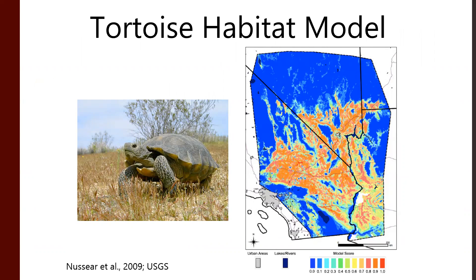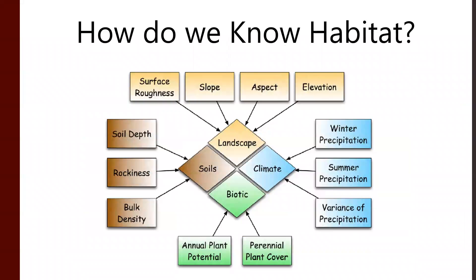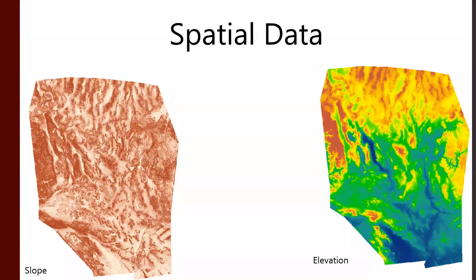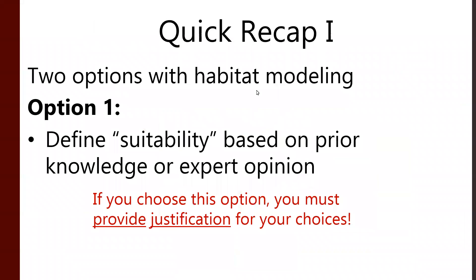Combining all of those pieces of habitat information — saying this is good, this is bad, this is survivable, this is not — all those things come together to give us a tortoise habitat model. We can define suitability based on our prior knowledge, our experts' opinions, and data, as long as we justify our choices. We can't just say tortoises like hanging out in sewers eating pizza, hanging out with wizened old rats, unless we have evidence to support that. And if we do, we can put it in the model.